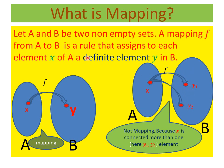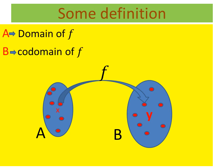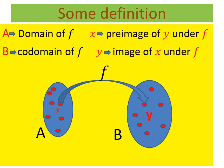Now I give some additional definitions related to mapping. Given two non-empty sets A and B, the first set A is called the domain of f, and B is called the codomain of f. Here I draw two non-empty sets A and B, and f is a rule that assigns to each element of A a definite element in B.